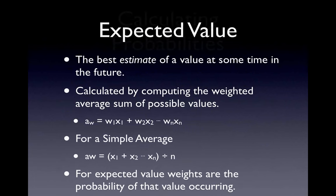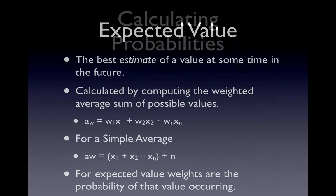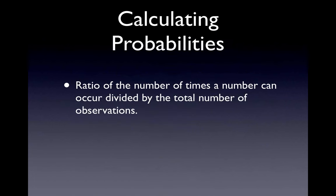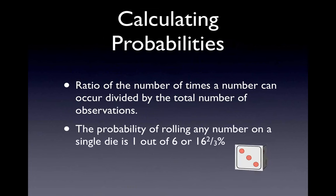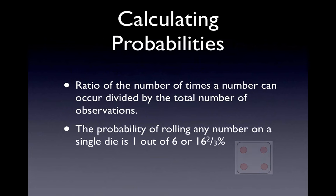How do we calculate the probabilities? The probability associated with a particular value is found by taking the ratio of the number of times that value can occur divided by the total number of observations. A simple example is the roll of a single die. The probability of rolling any of the numbers on the die is 1 out of 6, or 16 and 2/3 percent.